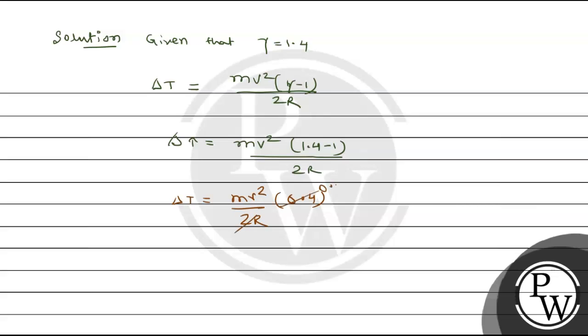The 2 cancels to give 0.2, and 0.2 means 1 by 5. So we can write M V square upon 5R. This is the value of del T.